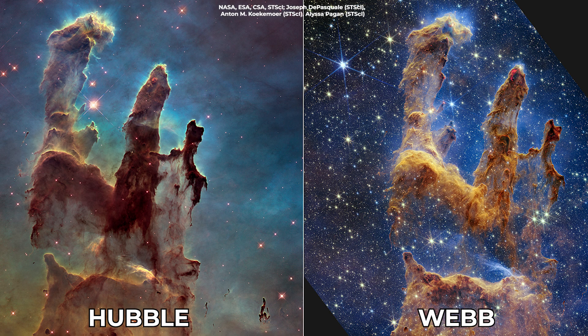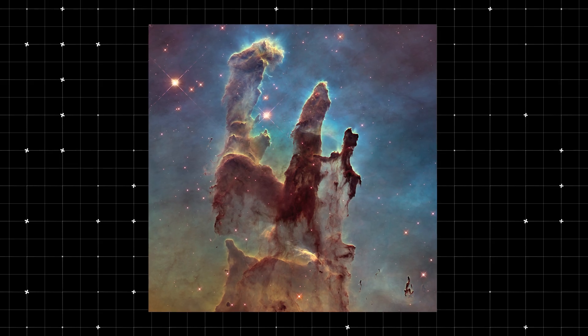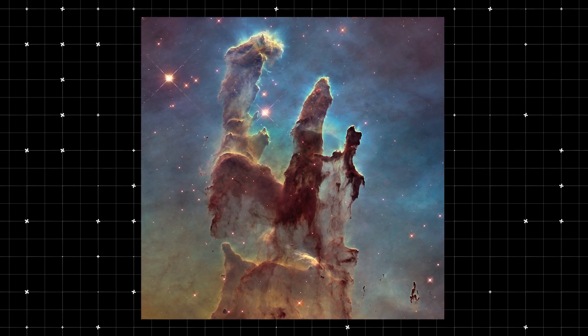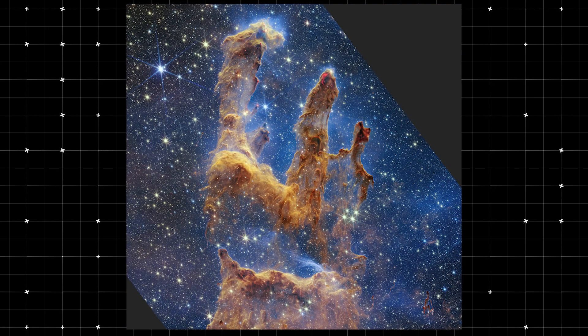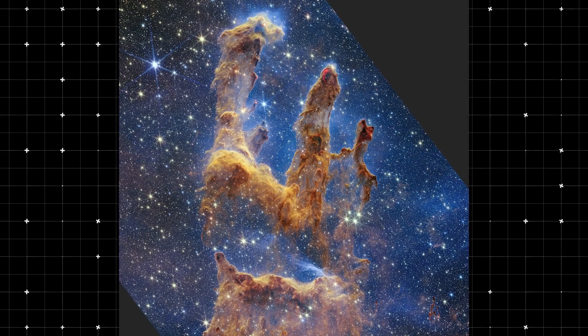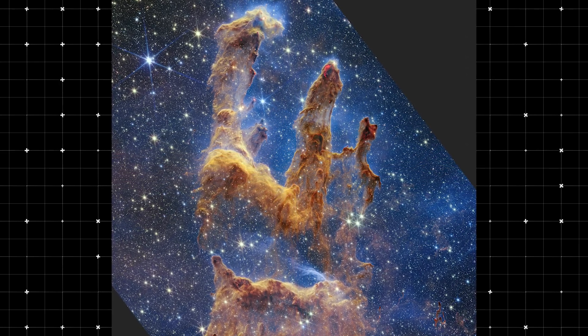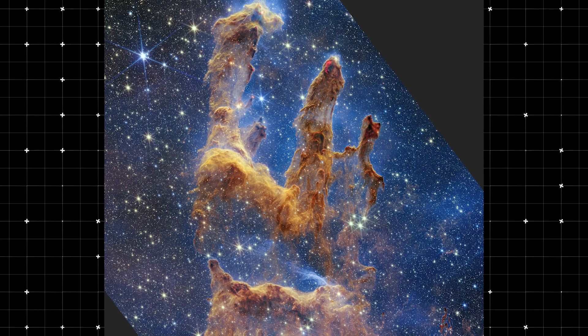For example, here's a comparison of the same region of space, the Pillars of Creation, taken by the Hubble Space Telescope and the James Webb Space Telescope. Hubble, which primarily captures visible light, gives us a beautiful, albeit limited view. Webb, on the other hand, reveals a whole new level of detail, uncovering stars and galaxies hidden in the dust.